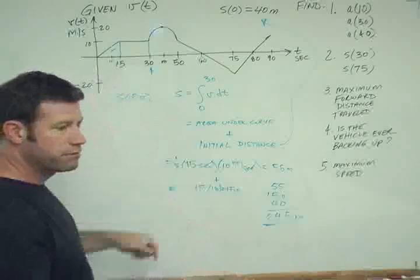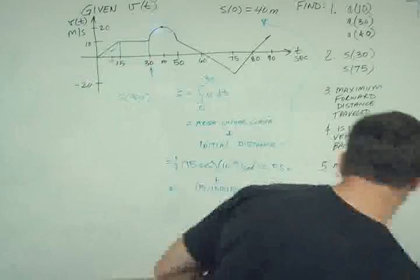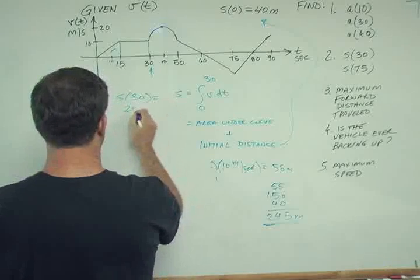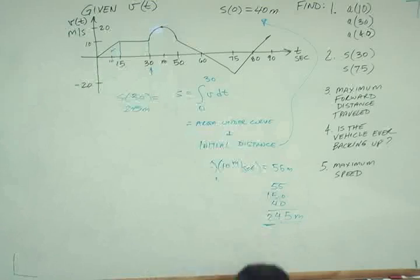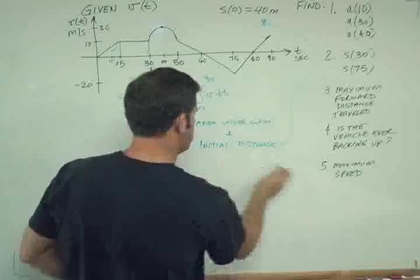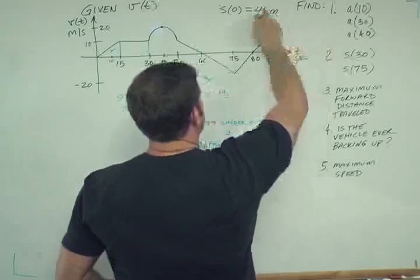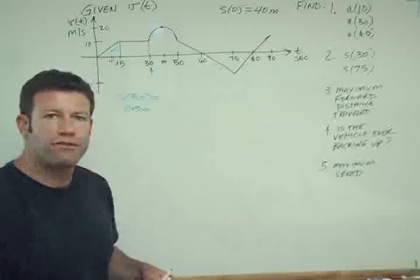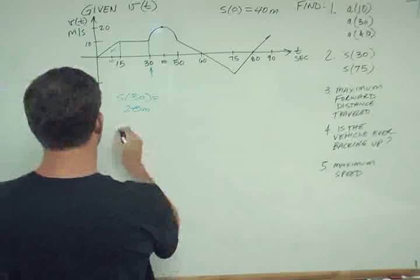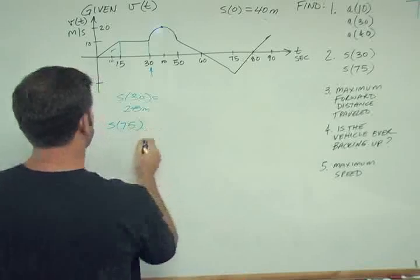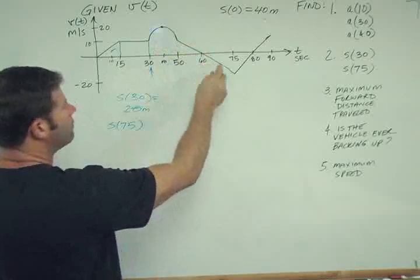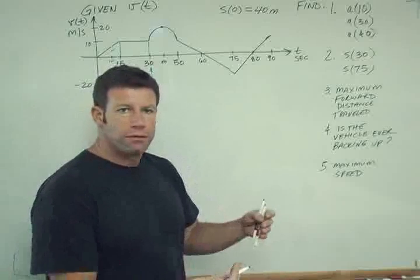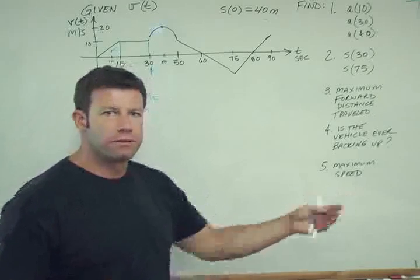Now let's look at s at 75. Well, we can use what we've already done for 30 in order to get out to 75 because it's cumulative. So what we have to do now is to find s at 75. We have to integrate all this other area under the curve. We've got some negative area too, which is going to cause our distance value to be less, right? And that makes sense. When we're backing up, we're in reverse, then we're losing forward distance at that time.